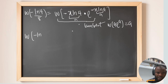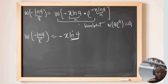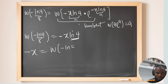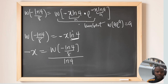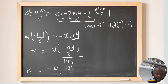So we have negative ln(4) over 8 equals negative x · ln(4). Dividing both sides by ln(4), we get negative x equals W(negative ln(4) over 8), all divided by ln(4). Therefore x equals negative W(negative ln(4) over 8) divided by ln(4).